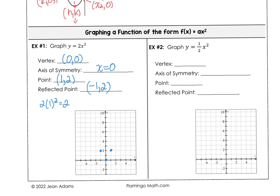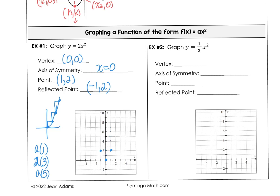One trick is the 1, 3, 5 pattern. A parabola will step up from the vertex: 1 up and 1 right, 3 up and 1 right, 5 up and 1 right, in an odd number pattern. But when our a value is 2, we multiply the a value by that pattern. So we stepped 2 up and 1 right, then the next step would be 3 times 2 equals 6, giving us the point 2, 8 on our graph.